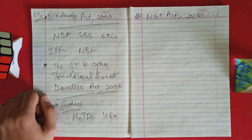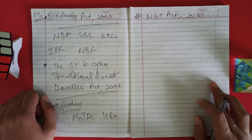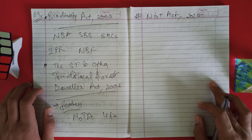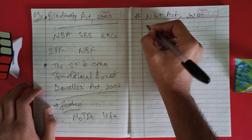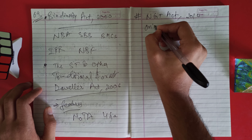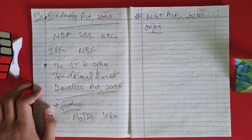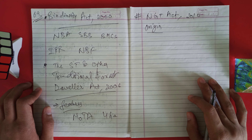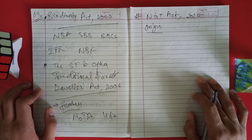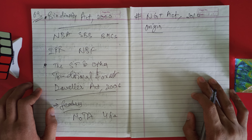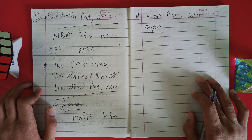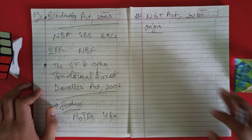NGT is mandated to dispose of cases within six months of their respective appeals. During the Rio de Janeiro Summit — the United Nations Conference on Environment and Development in June 1992 — India, as a participating state, vowed to provide judicial and administrative remedies for victims of pollution and other environmental damage.